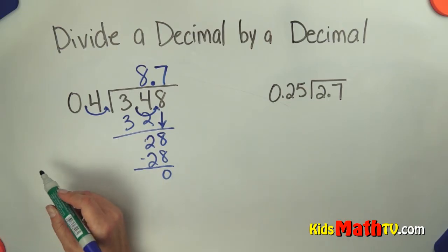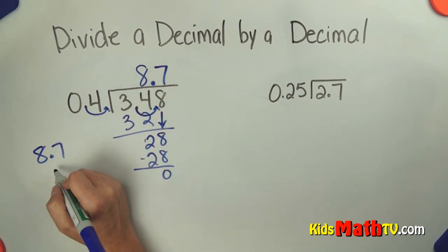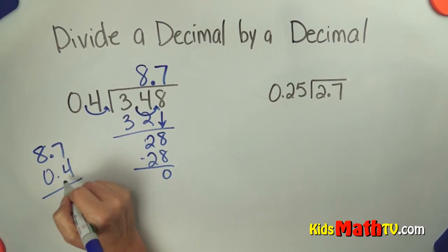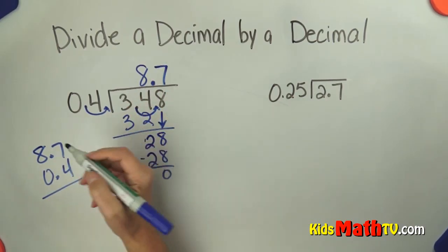You can actually check your division by multiplying. We take our answer 8 and 7 tenths and multiply it by 4 tenths. We should get 3 and 48 hundredths.